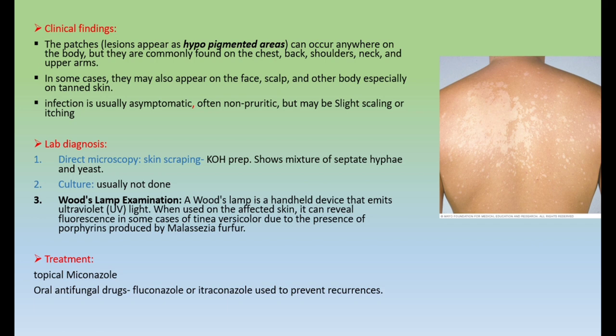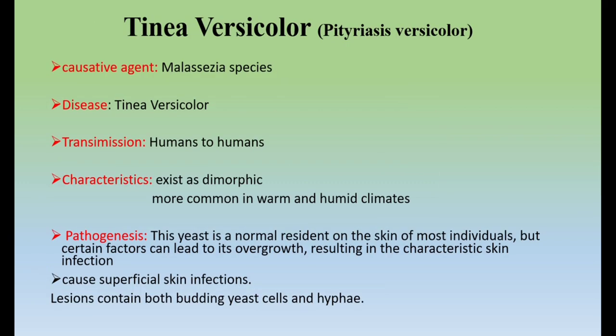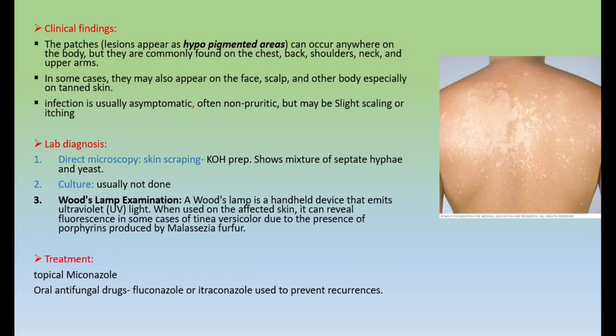In summary, Tinea Versicolor is produced by Malassezia species. Transmission is human to human. It is dimorphic, normally present on skin, but in some individuals causes superficial skin infection with hypopigmented areas. In lab diagnosis we use microscopy and culture.